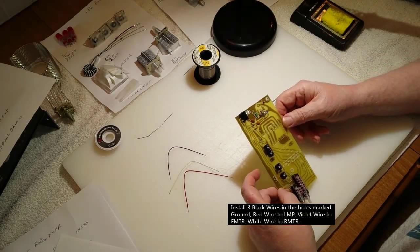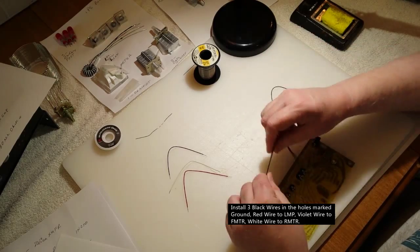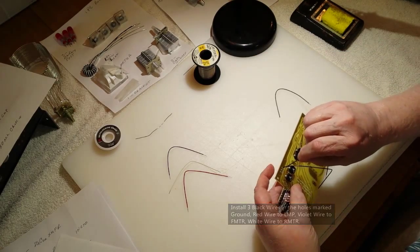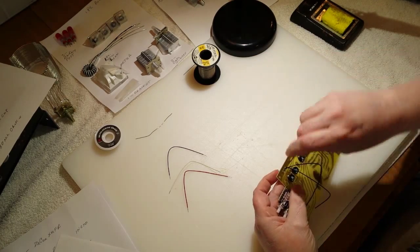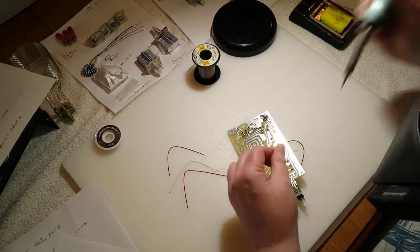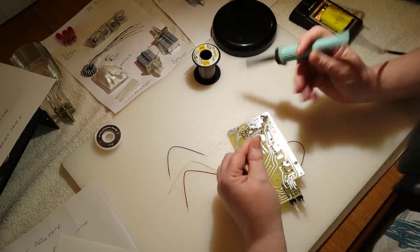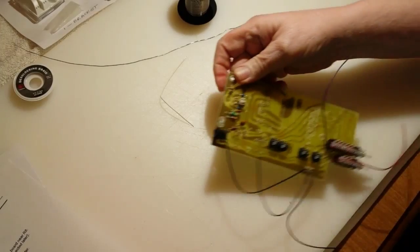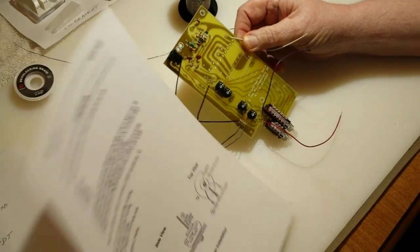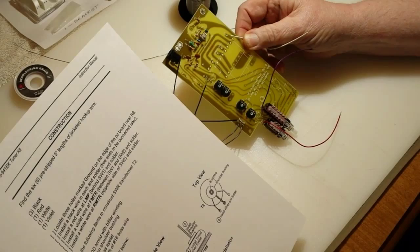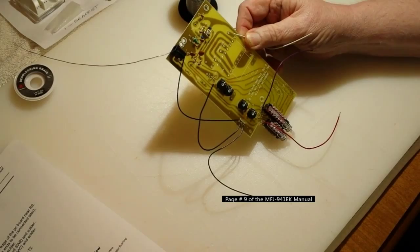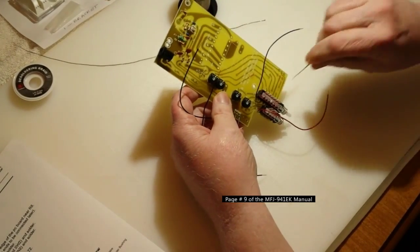The colored wires are all the same length and at this point all we're doing is installing them in the board. The three black ones go right next to each other in the land pattern that is ground. Solder those down and if there's any extra little bit of wire sticking out we nip it off with the flush cutters.